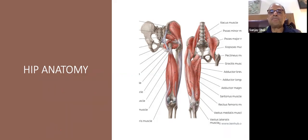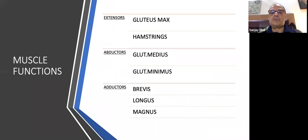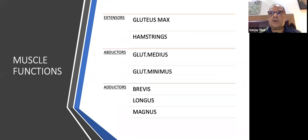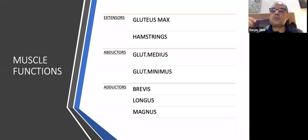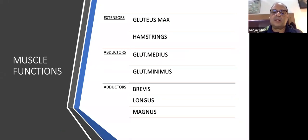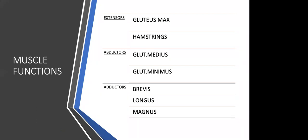Strong extensors are gluteus maximus and hamstrings. Abductors are gluteus medius and minimus. Adductors include adductor longus and magnus — all in groups medially, laterally, and posteriorly. You have to be aware of these muscles and their actions, especially when assessing gait, and know their attachments and innervation.